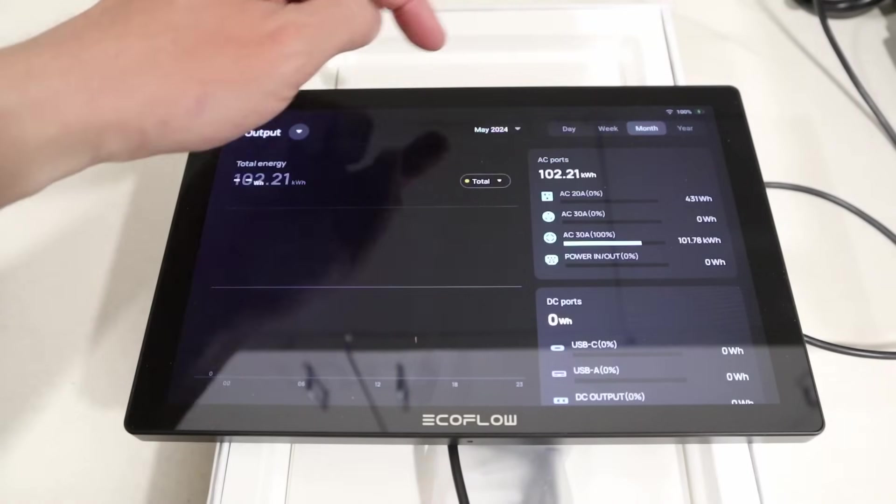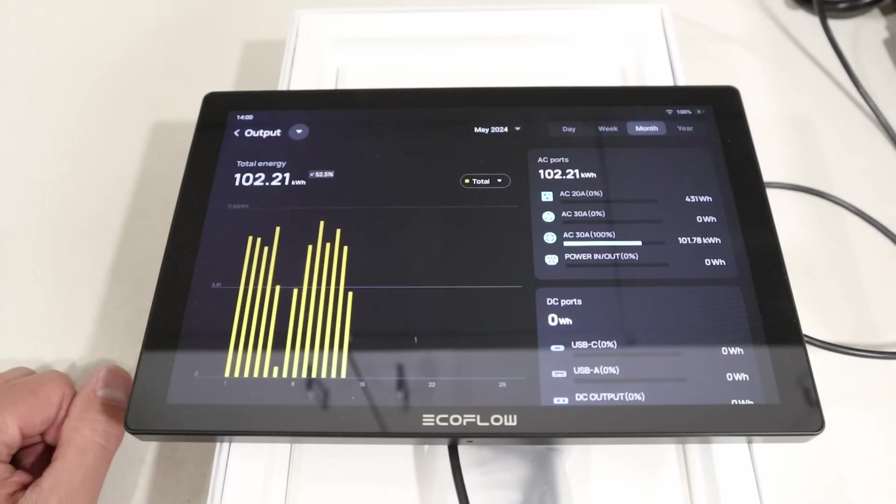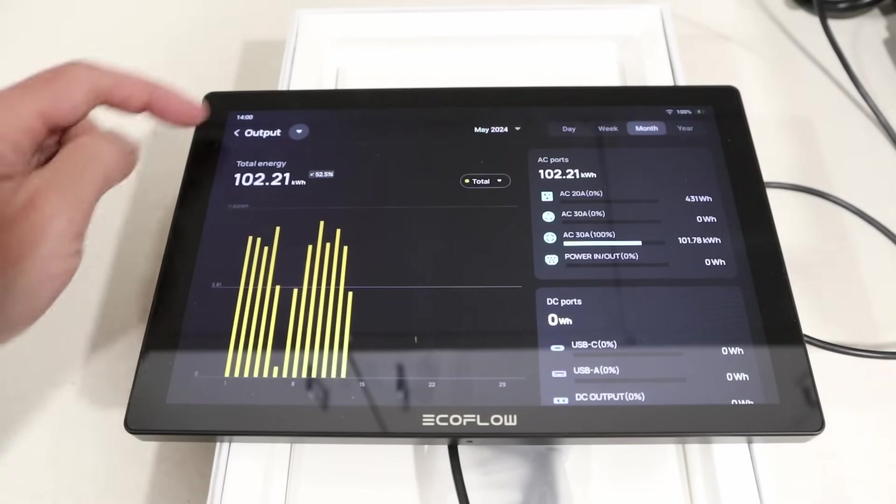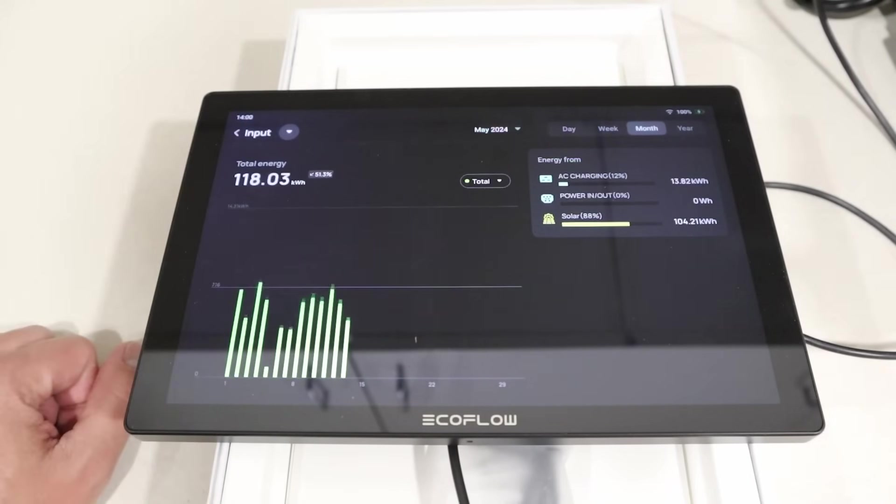If we go down and check out the months, we have it set to May here. Each one of these lines is a day. And so far, for half the month, we have a total output of 102 kilowatt hours. And for the input, we have 118 kilowatt hours.